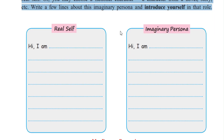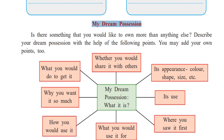And you could write all the details in your notebook as such. Here is an activity for you to do: My dream possession. Possession means something which you have. But dream possession means something that you wish to have — you do not have it, but you wish to have it.